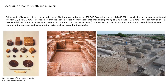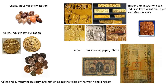Rulers made of ivory were in use during the Indus Valley civilization period, prior to 1500 BCE. Excavations at Lothal, dating to about 2400 BC, yielded one such ruler calibrated to about 1/16th of an inch (1.6 millimeters). Historians hold that the Mohenjo-daro ruler is divided into units corresponding to 1.32 inches (33.5 millimeters), marked in decimal subdivisions with amazing accuracy within 0.005 inches (0.13 millimeters). Ancient bricks found in the architecture of the region were of uniform dimensions corresponding to these units.